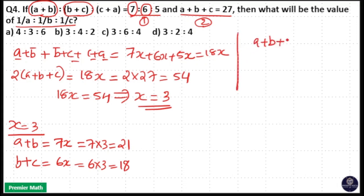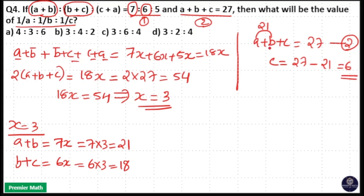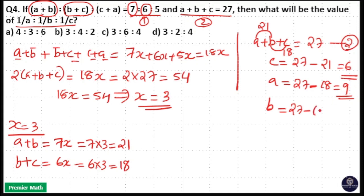Since a+b+c = 27, and a+b = 21, then c = 27 - 21 = 6. Similarly, b+c = 18, so a = 27 - 18 = 9. For b, we know a+c = 9+6 = 15, so b = 27 - 15 = 12. Therefore a = 9, b = 12, c = 6.